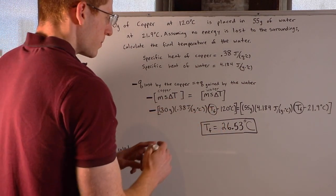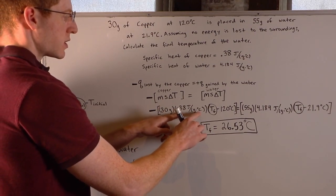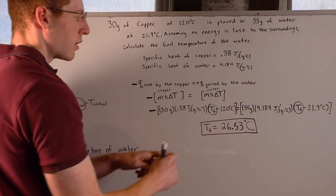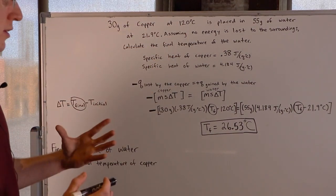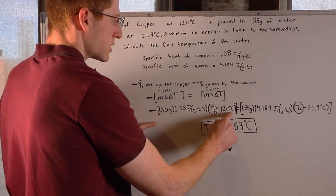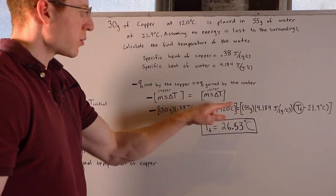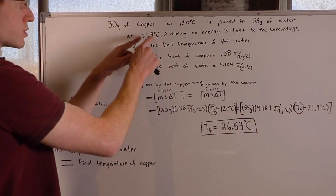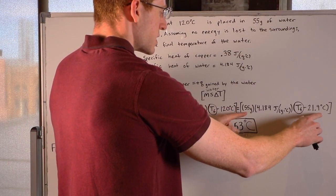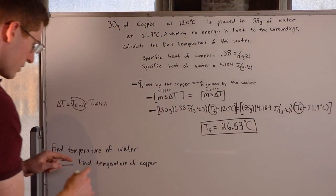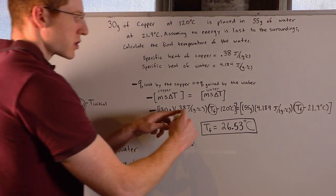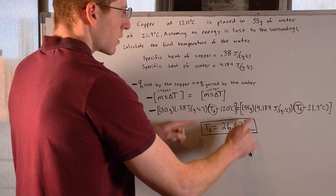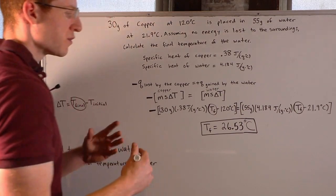Plugging in the numbers: for copper, 30 grams, specific heat 0.38, and delta T is T final minus 120 degrees Celsius — all negative because this is heat lost. For water, 55 grams, specific heat 4.184, and delta T is T final minus 21.9 degrees Celsius — positive because this is heat gained. The T final is the same variable in both equations. Solving the algebra, the final temperature of both the water and the copper is 26.53 degrees Celsius.